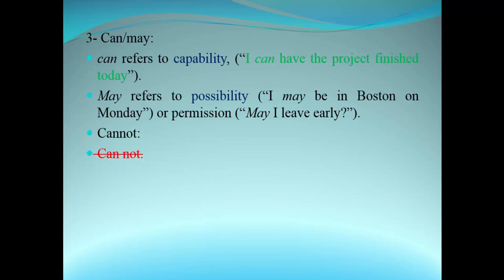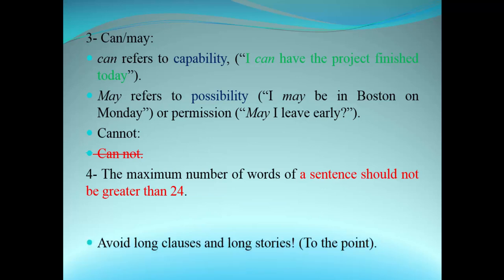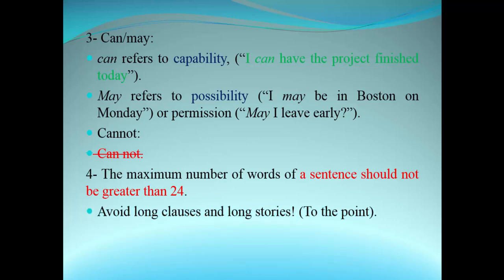'Cannot' is written as one word: C-A-N-N-O-T. Do not write 'can' and then a space and 'not' — those are common mistakes in writing. Also, the maximum number of words in a sentence should not exceed 24 words. A sentence that is too long is unacceptable. Avoid long clauses and long stories — be to the point.